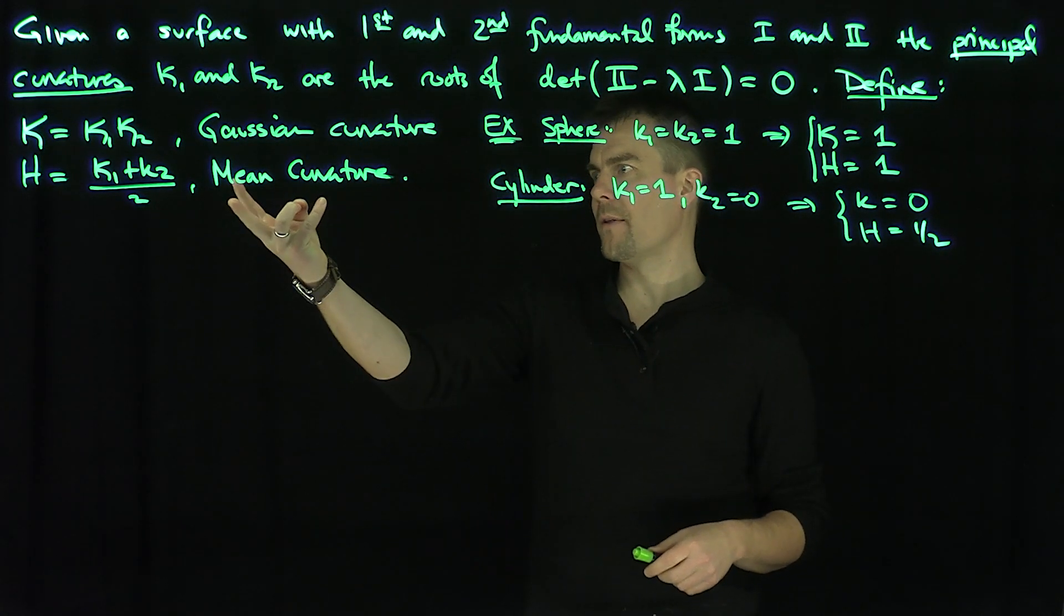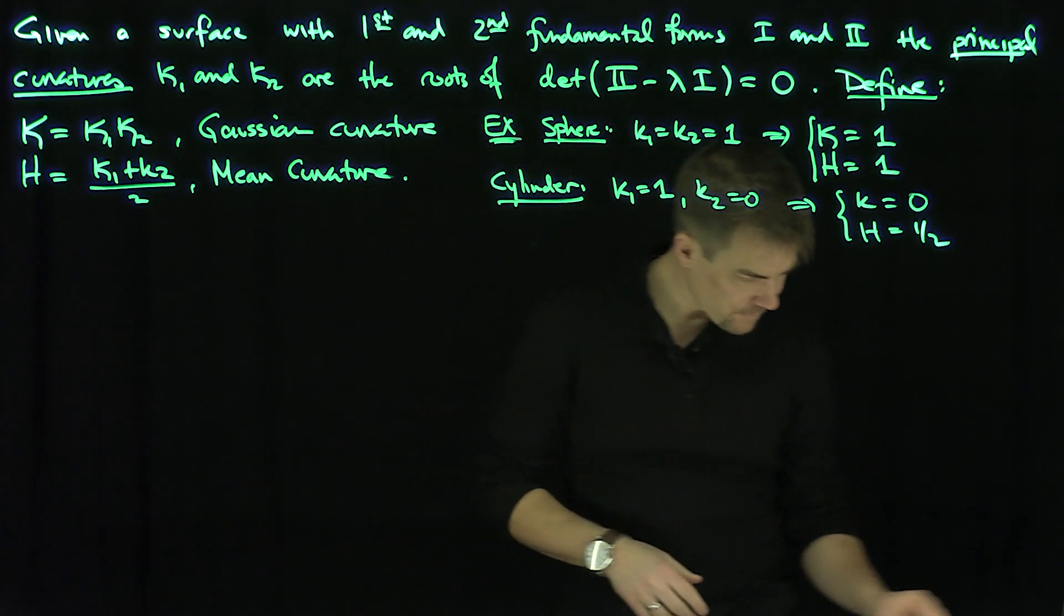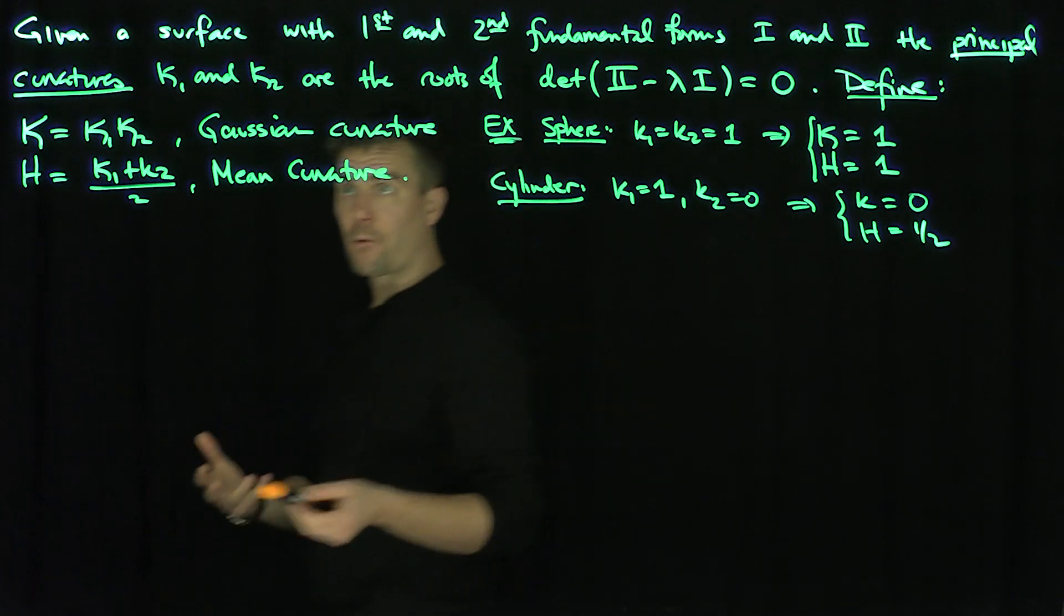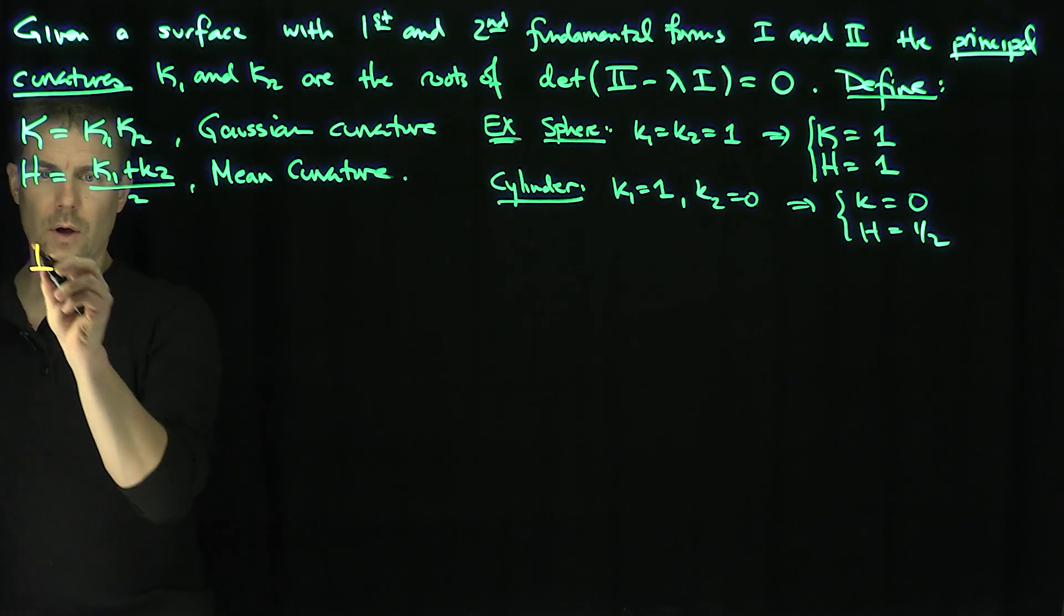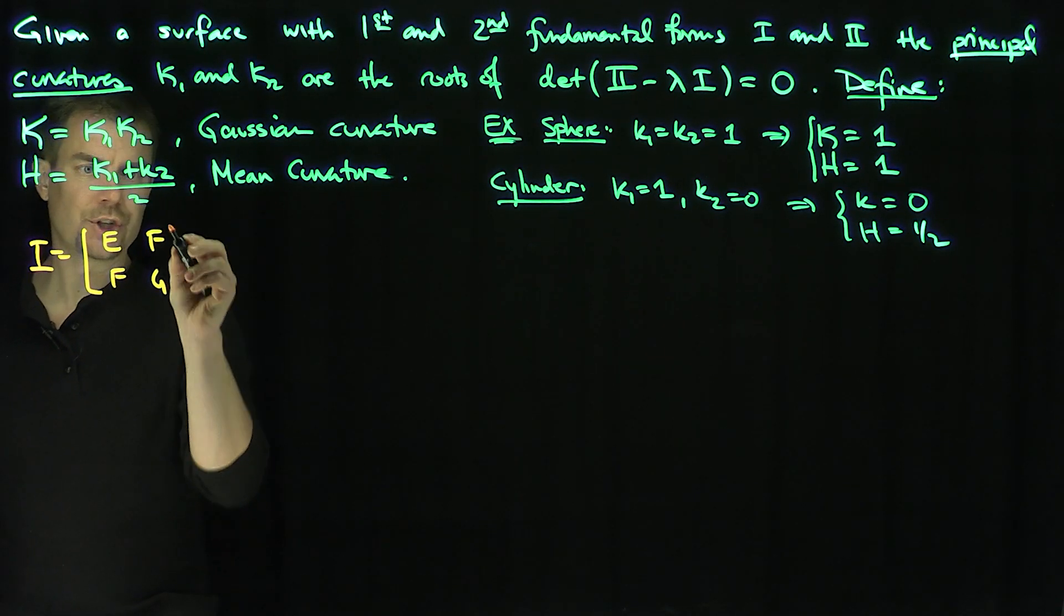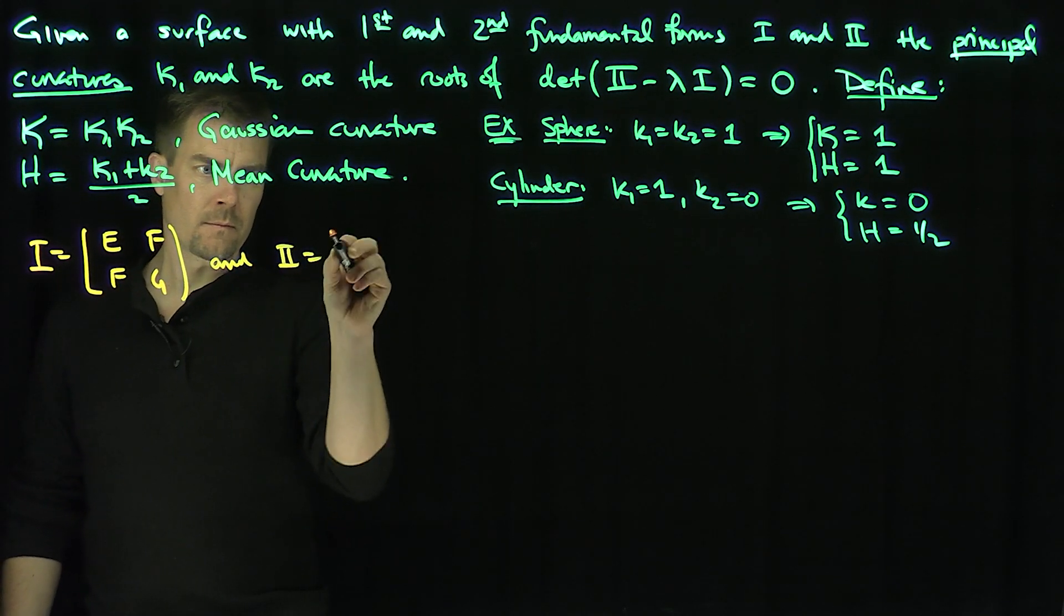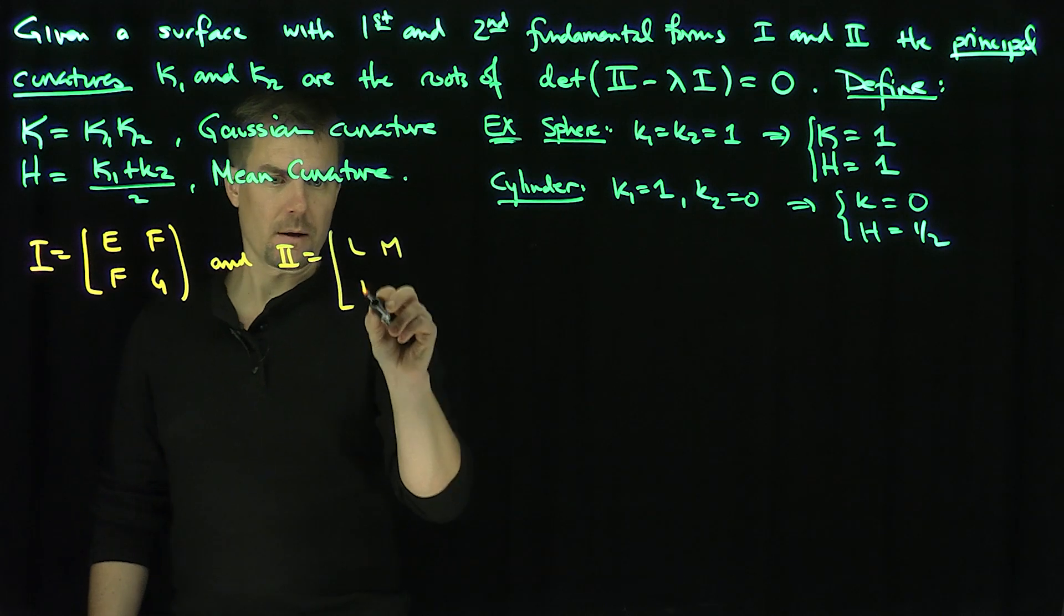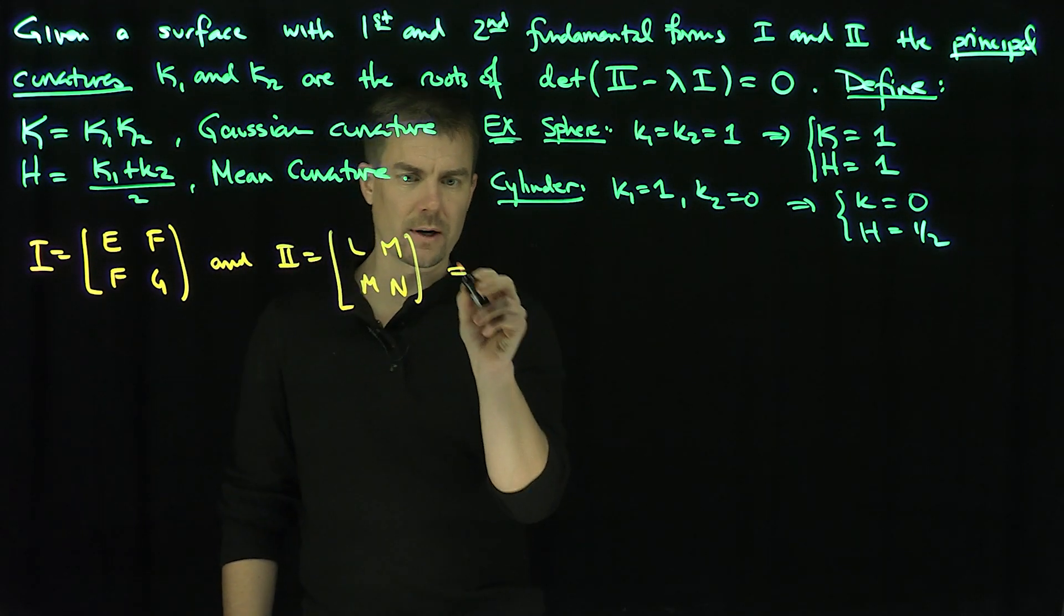Those are two examples of computing Gaussian curvature and mean curvature. Of course, for a plane, we found that they were both equal to 0. And we want to find out some interesting cases of these things. So let's figure out formulas for these things in terms of the first and second fundamental forms. So recall that 1 is this symmetric form. It's going to be E F F G, and 2 is L M M N.